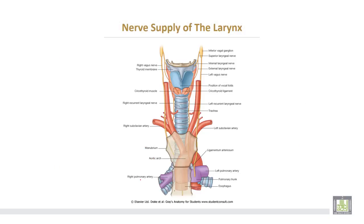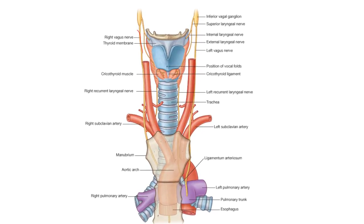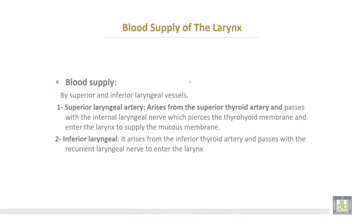The blood supply comes from the superior and inferior laryngeal vessels. This is the vagus nerve, which gives the recurrent laryngeal nerve. On the right side, the recurrent laryngeal nerve turns around the subclavian artery; on the left side it turns around the aortic arch. The superior laryngeal nerve also arises from the vagus and gives the internal laryngeal nerve, which pierces the thyrohyoid membrane to supply the mucous membrane of the larynx, and the external laryngeal nerve, which supplies the cricothyroid muscle.